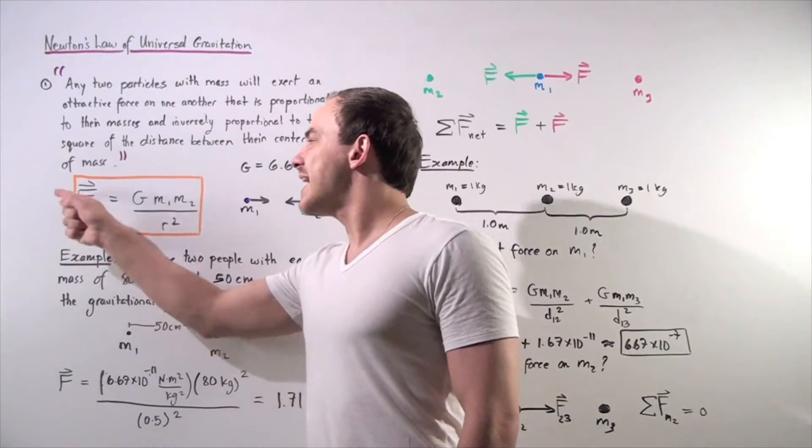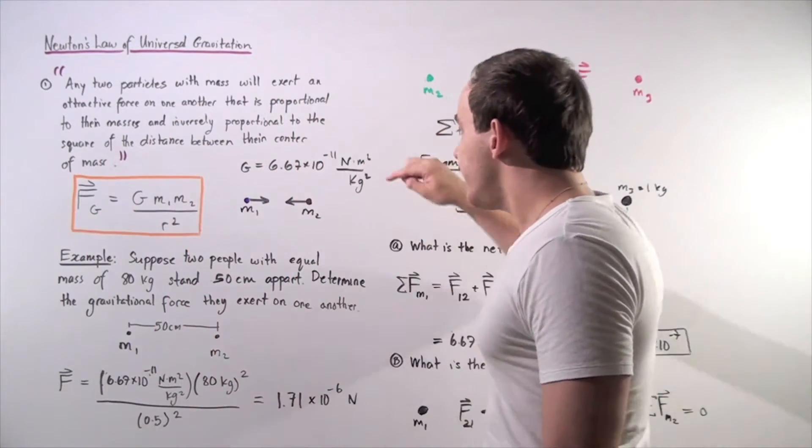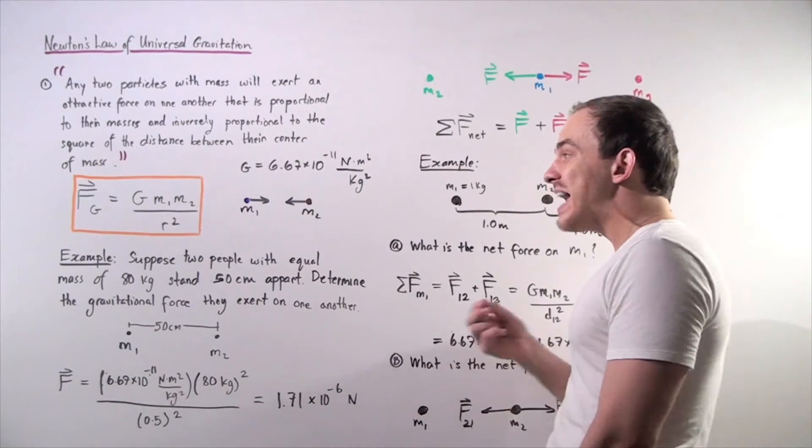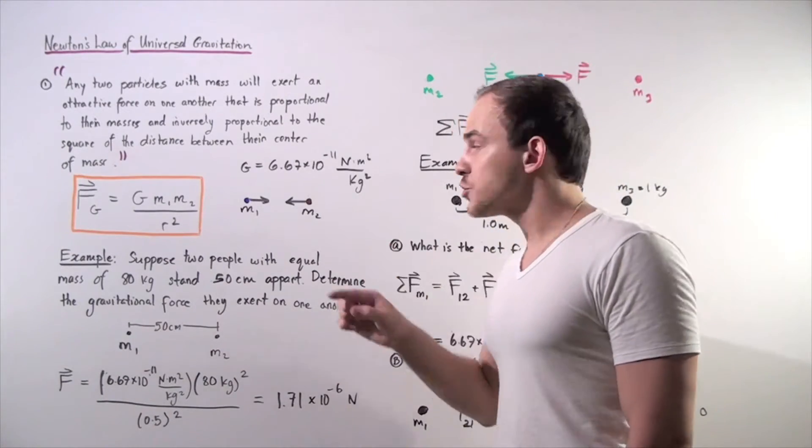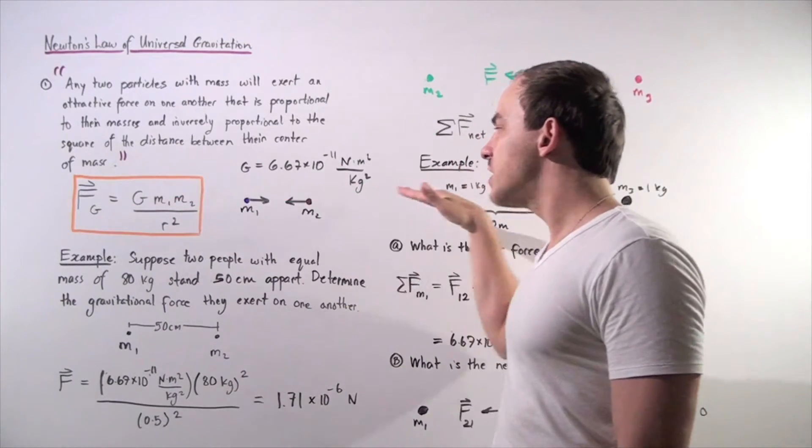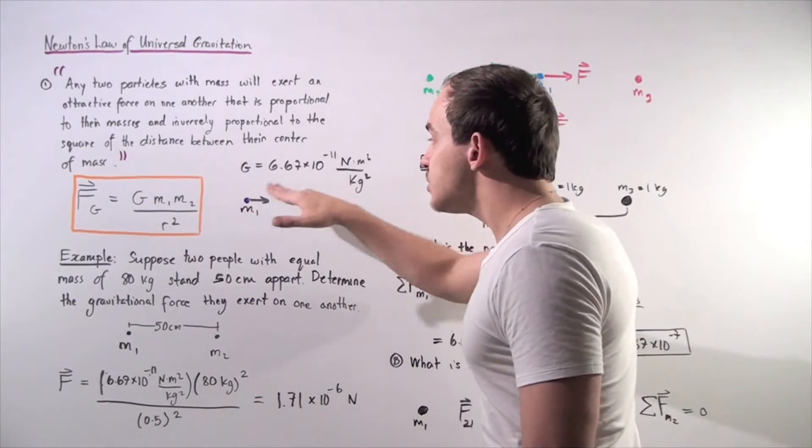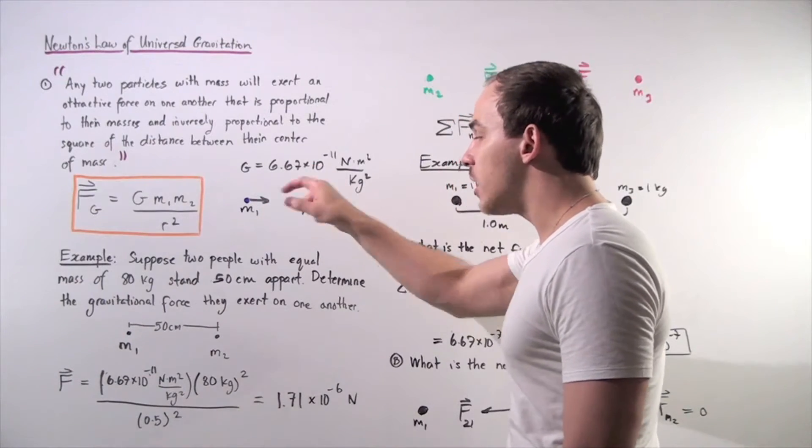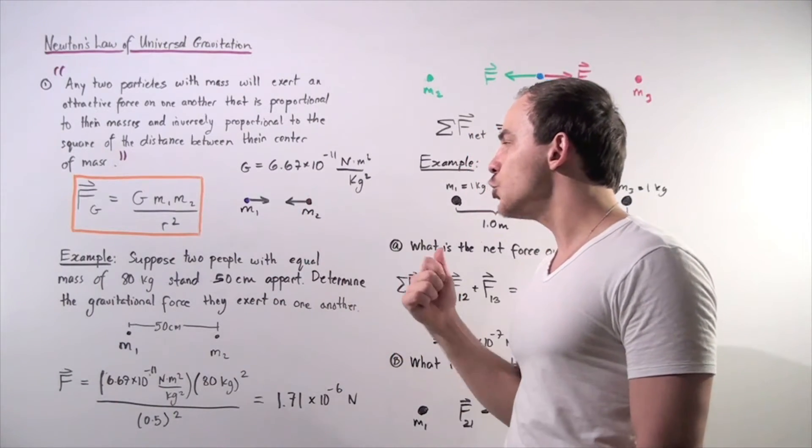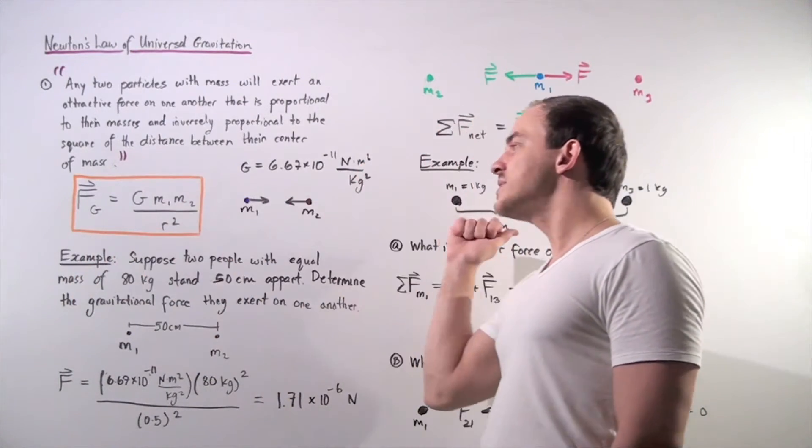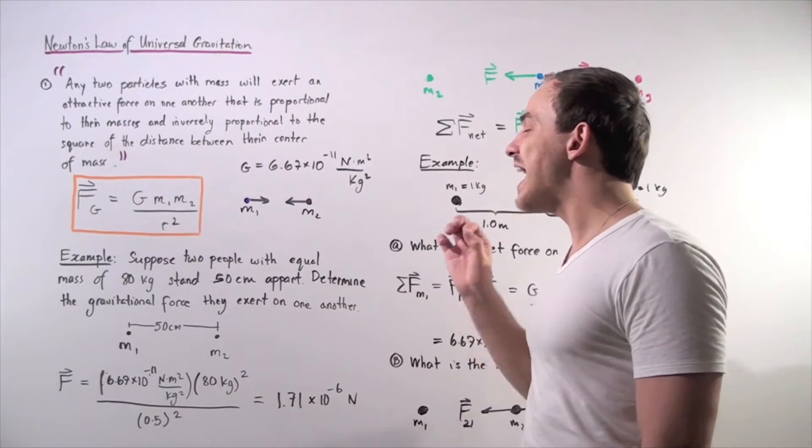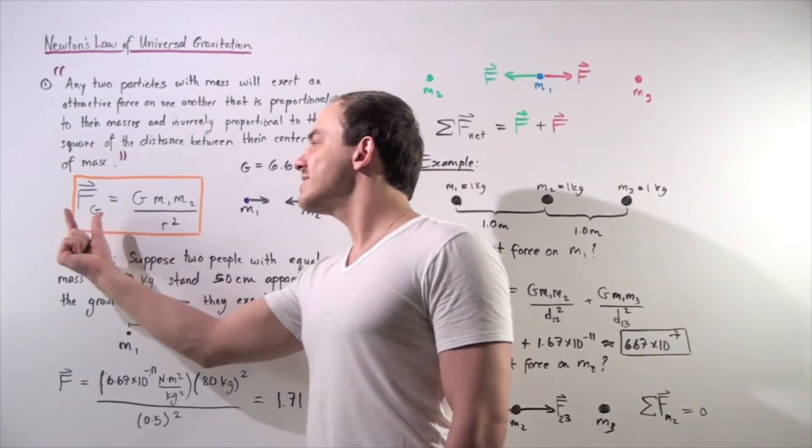Now what exactly is the direction of the force? Well, if we examine mass two, mass one exerts an attractive force on mass two. This force will point towards mass one from mass two and will lie along the axis that connects these two masses, their center of masses. Likewise, the force that acts on mass one due to mass two will point in the opposite direction, will lie along the same axis, but will point in the opposite direction and will have the same exact magnitude.